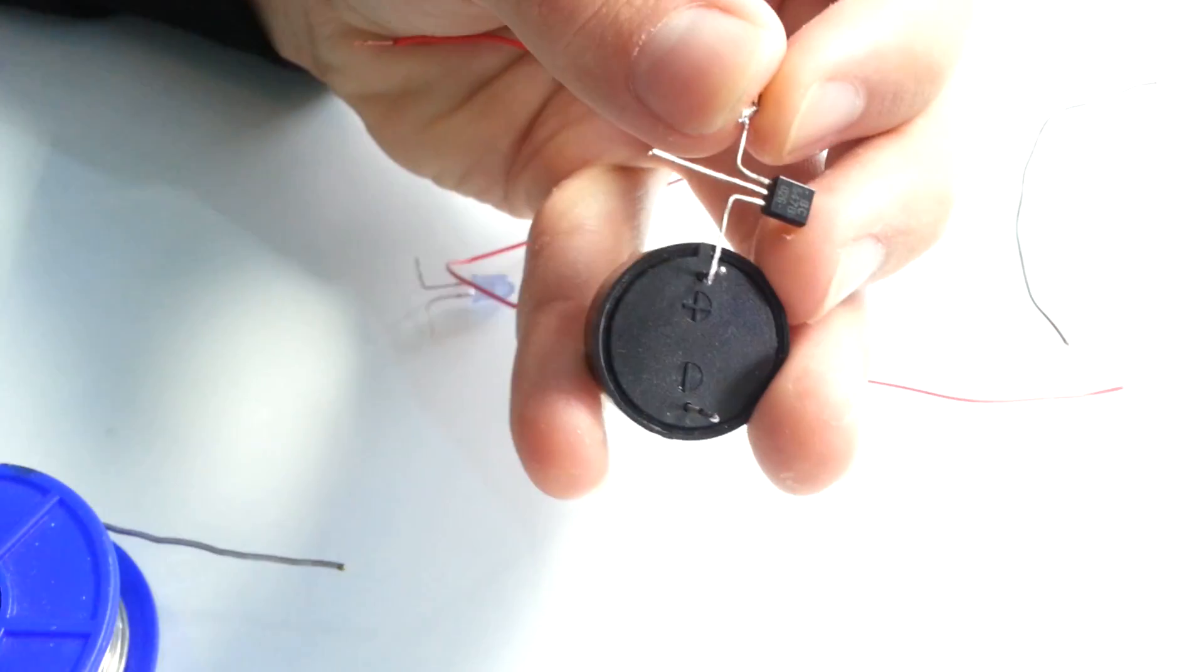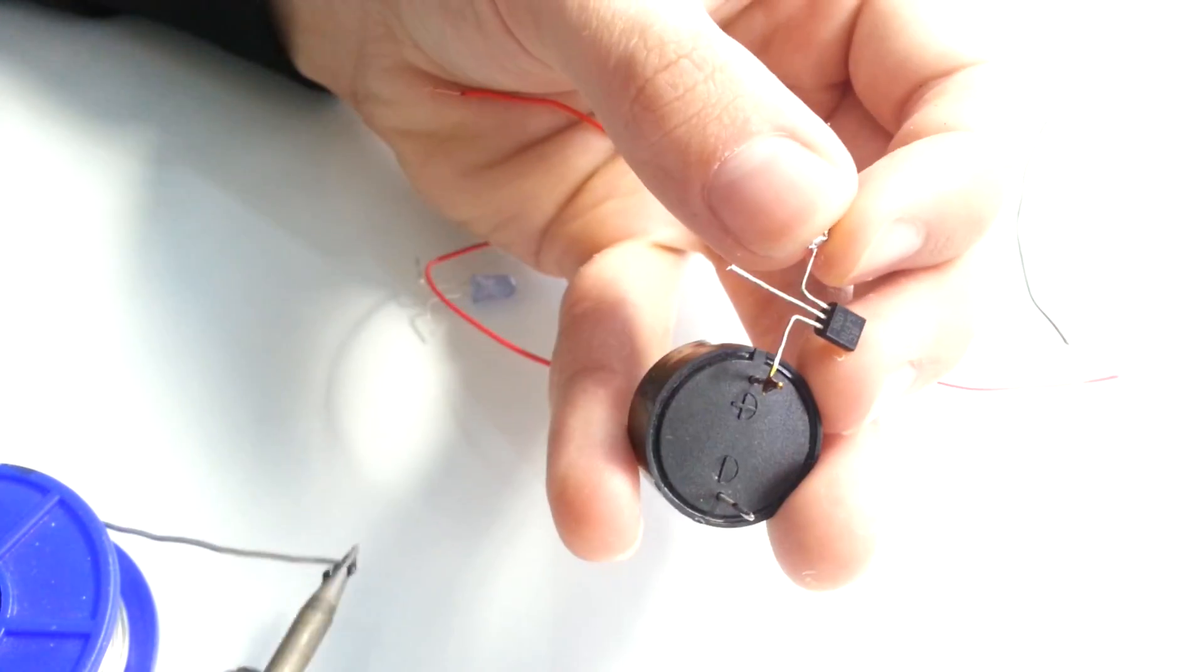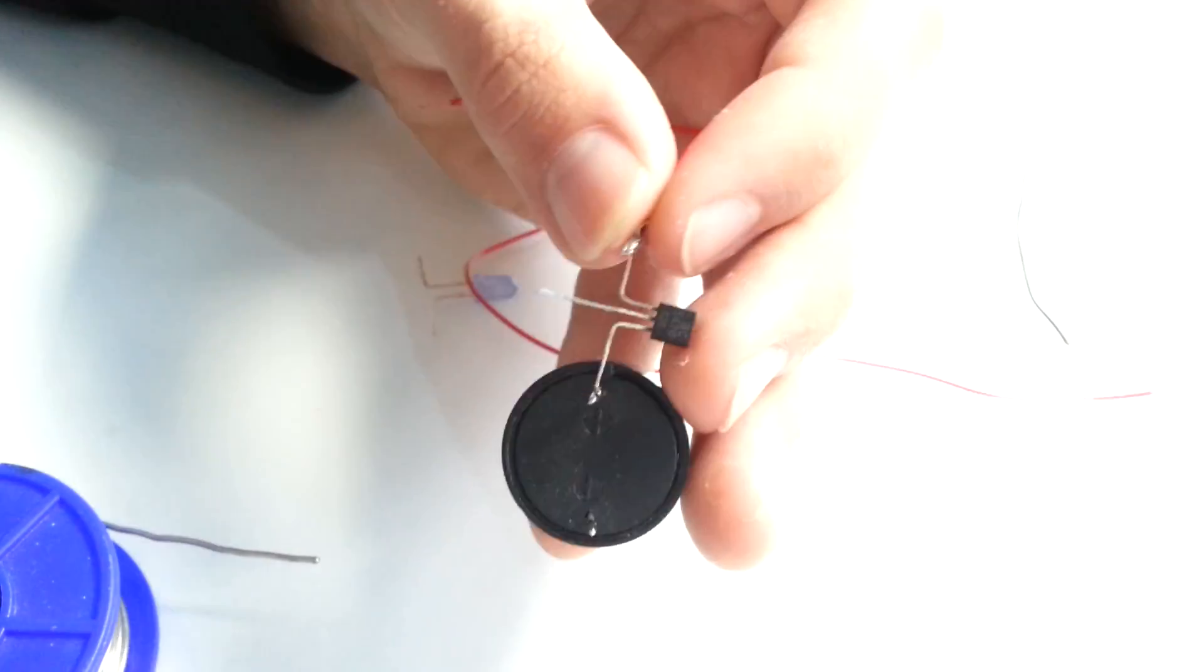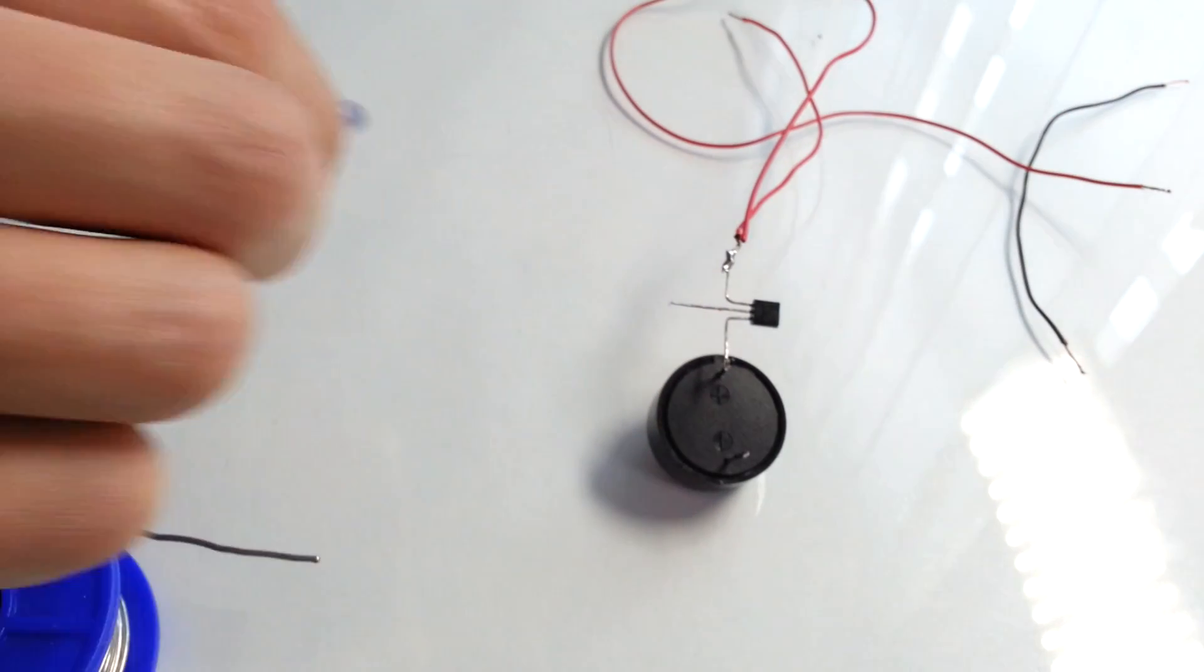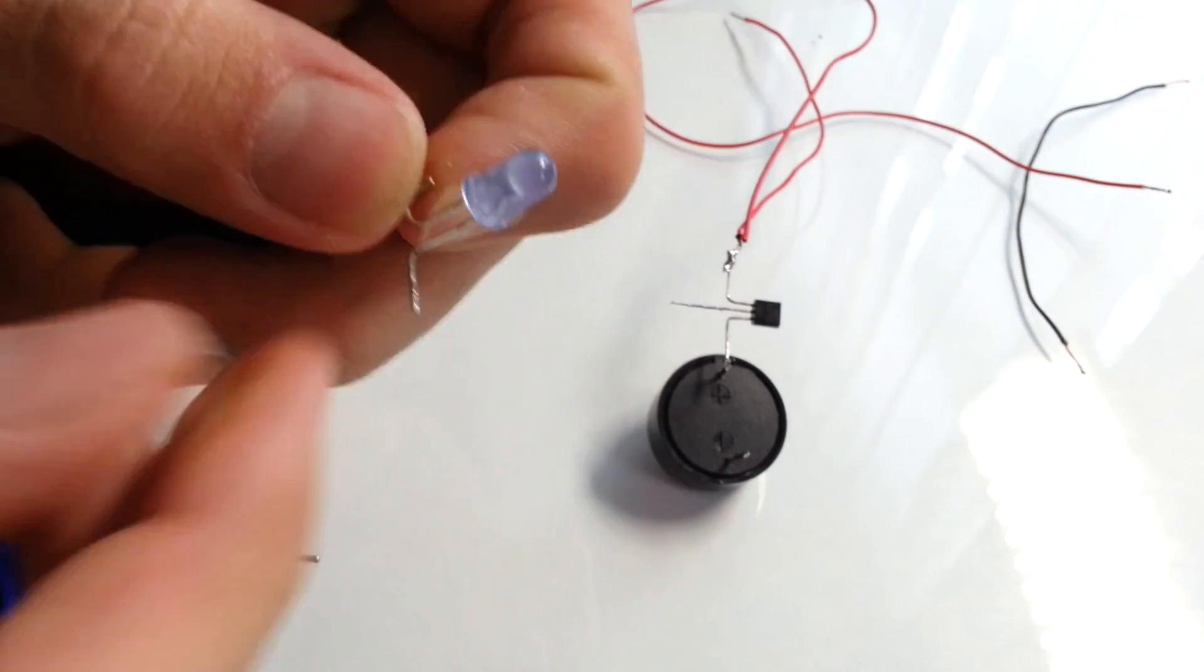Now I'm going to solder emitter lead of the transistor to the plus lead of the buzzer. Now let's solder an anode lead of the LED to minus lead of the buzzer.